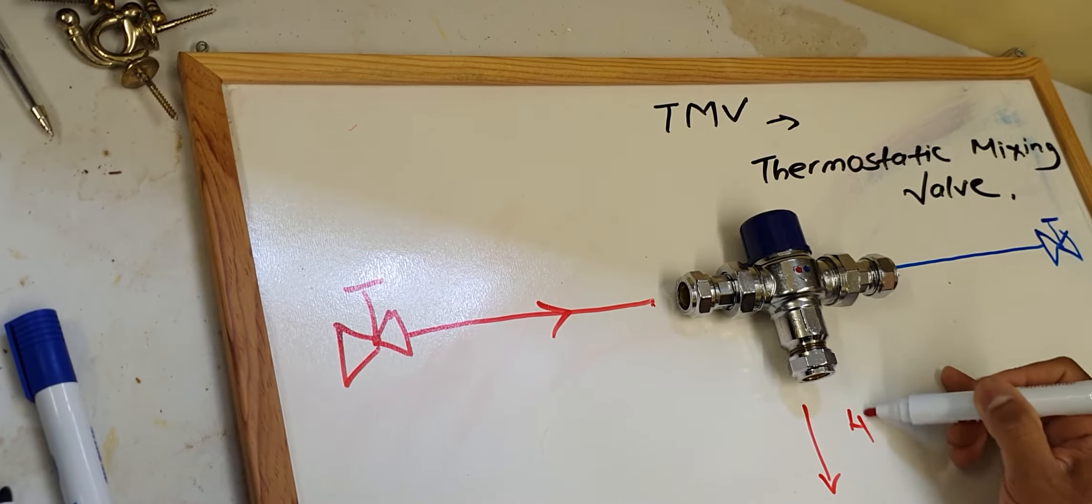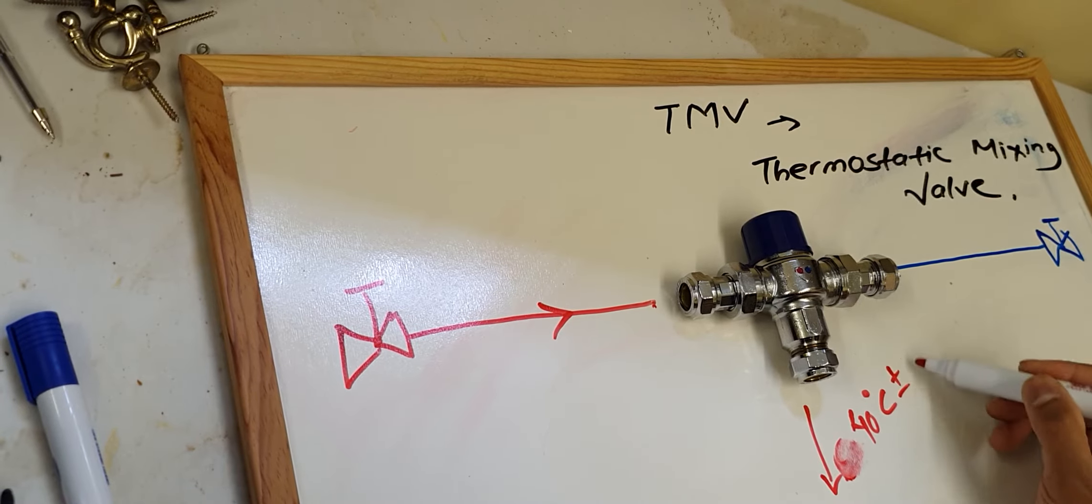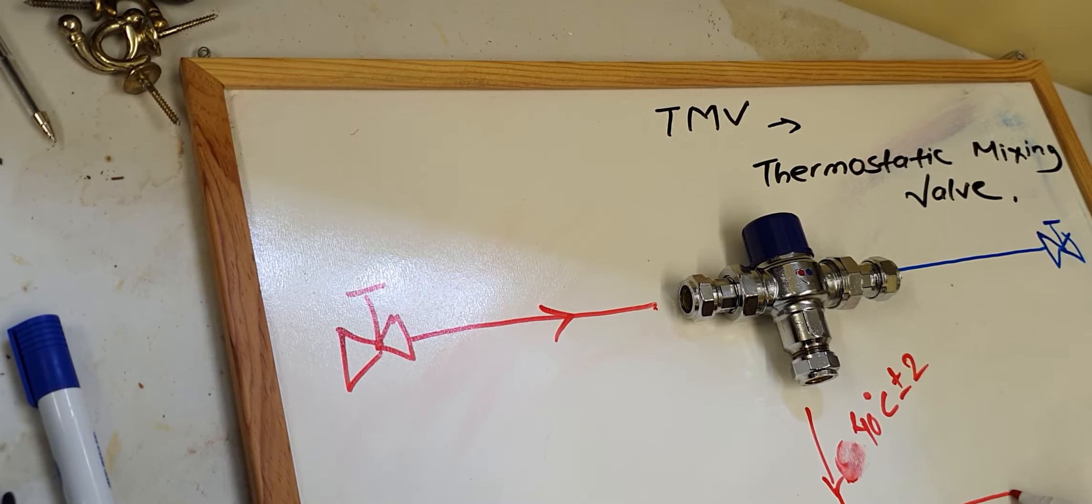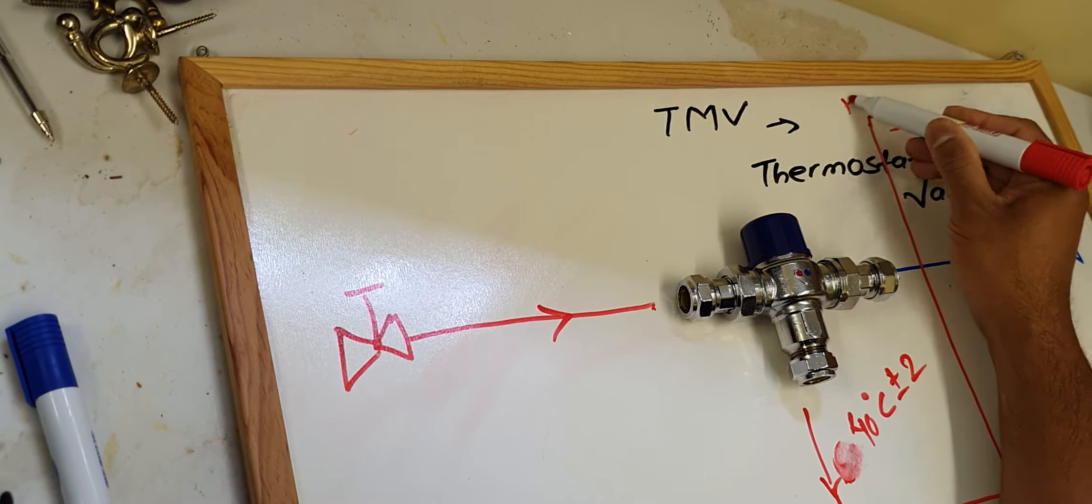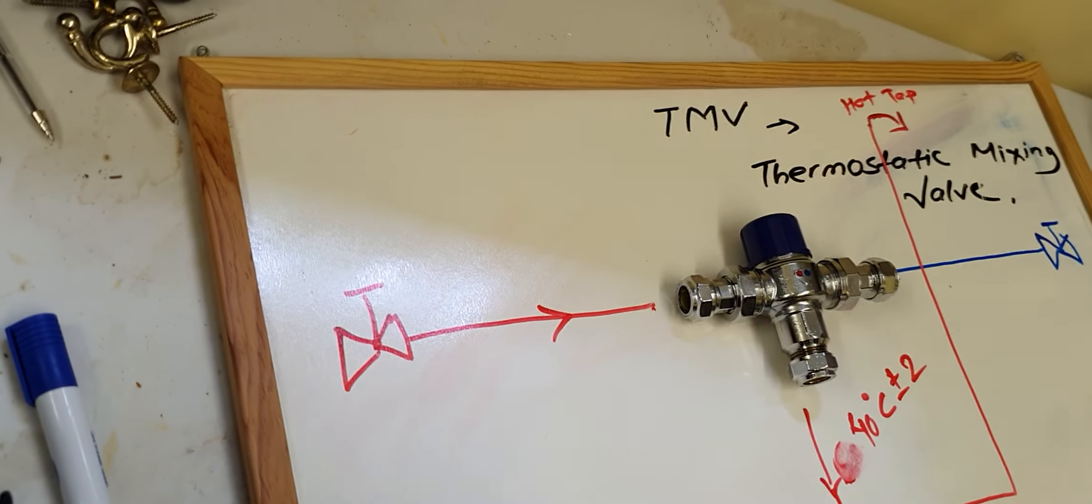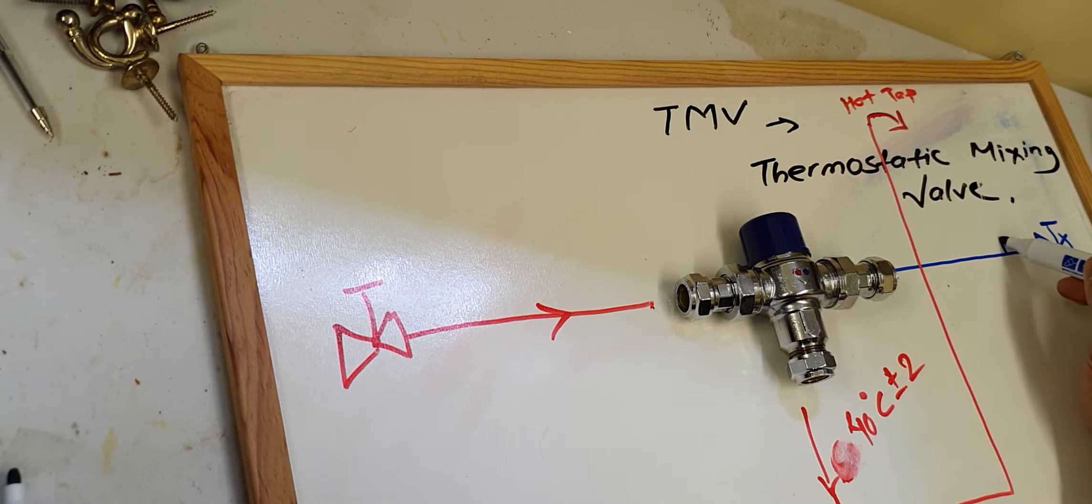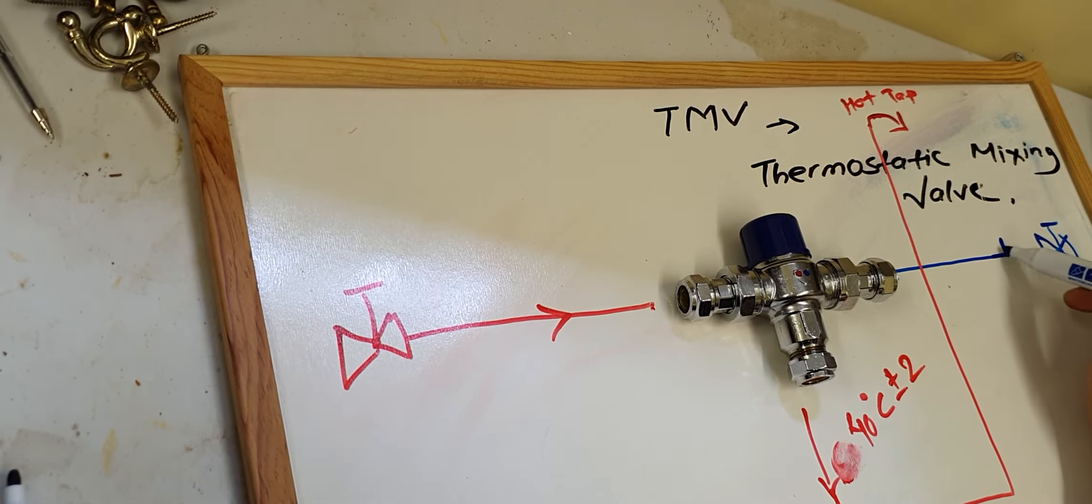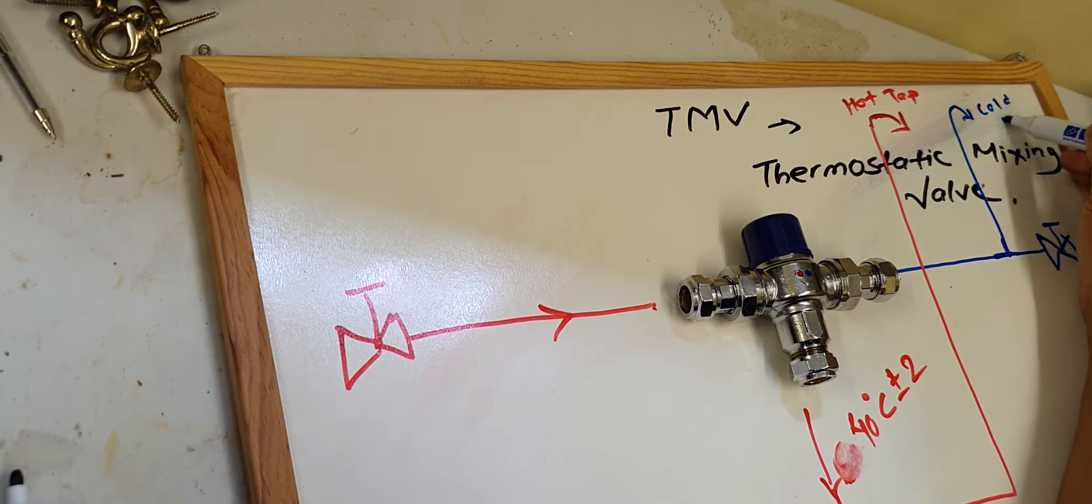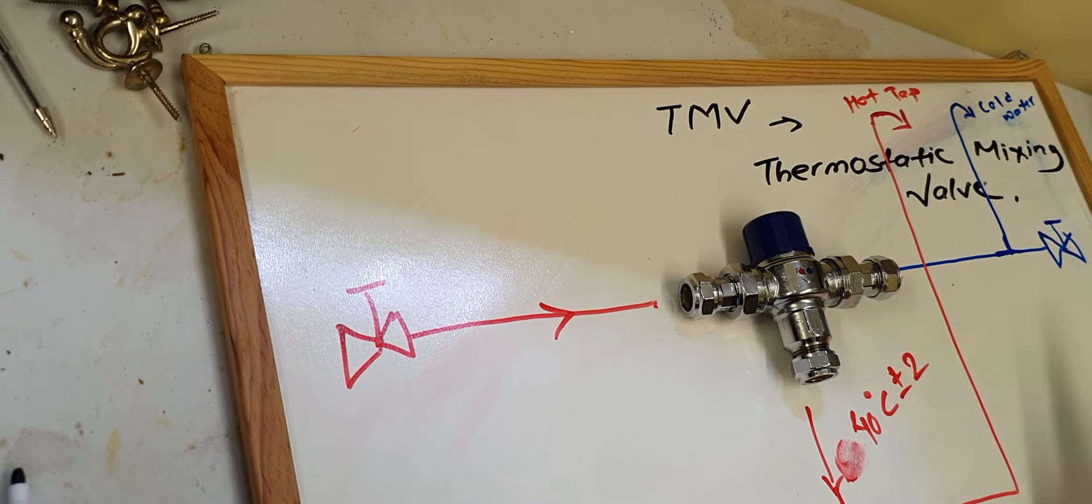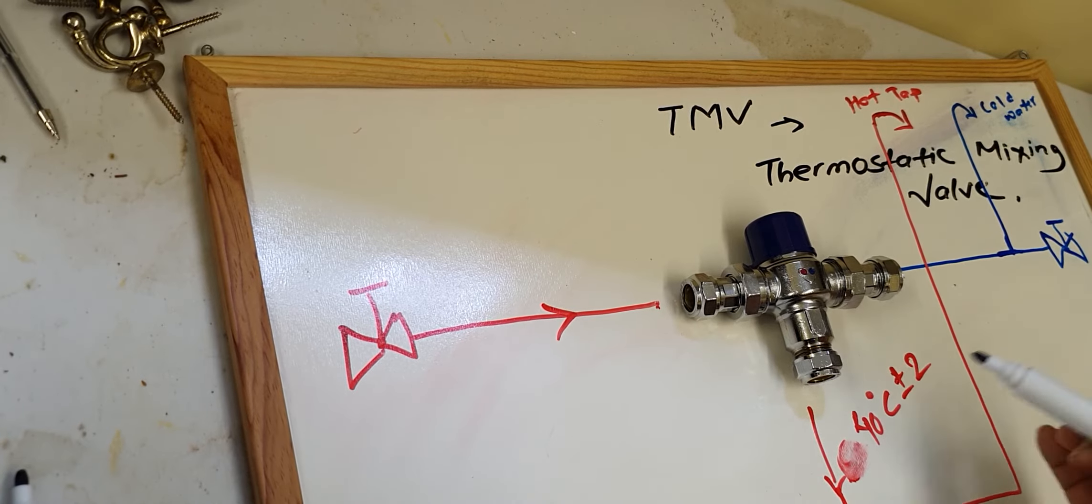The blended water goes to the hot water tap. For the cold water, you will use the tee here. This is the rough diagram of the TMV, how to install the TMV.